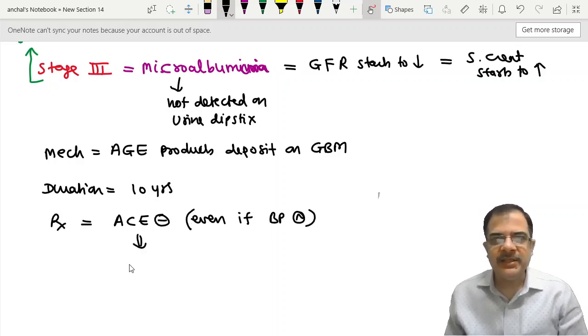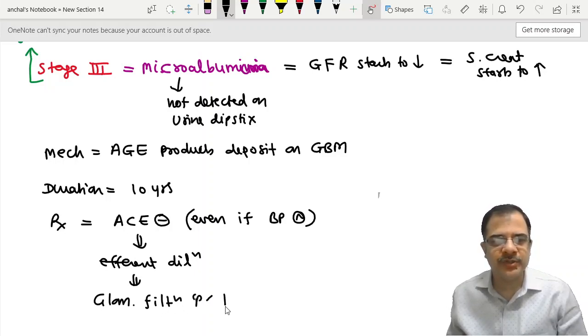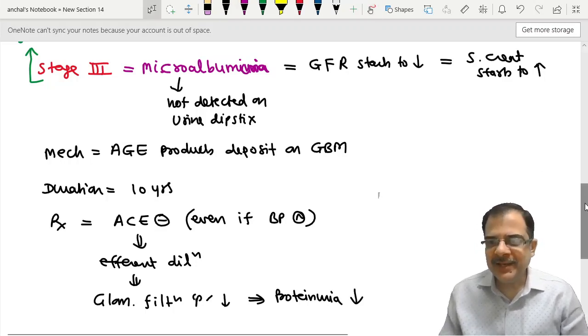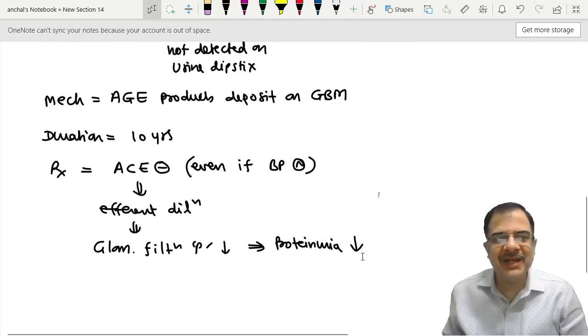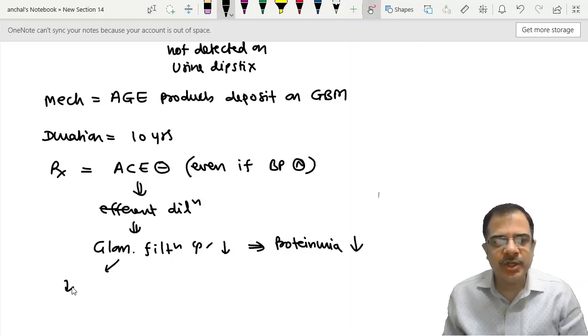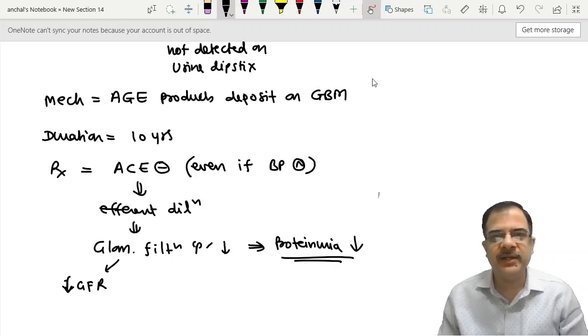Reason: ACE inhibitor causes efferent arteriole dilation because they inhibit the angiotensin effect. As a result, glomerular filtration pressure reduces. And when glomerular filtration pressure reduces, proteinuria reduces, albuminuria reduces. So we will give ACE inhibitor. ACE inhibitor will have more benefit than risk. Benefit of decreasing proteinuria because they cause free radical injury. What is the risk? Risk is when glomerular filtration pressure is reduced, there is a risk of mild reduction in GFR also. But that risk is very negligible as compared with the benefit we are achieving. Therefore, ACE inhibitors are given here.